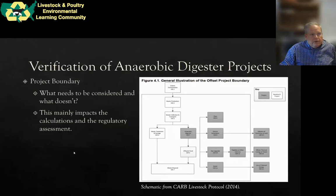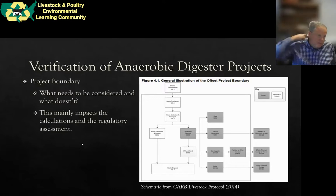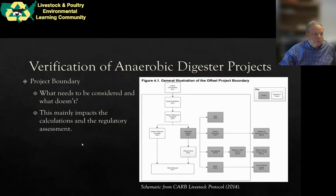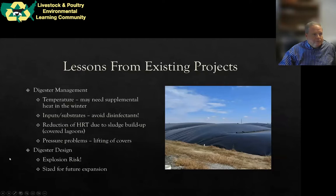Each protocol has an evaluation of what the project boundary looks like. This schematic is from the livestock protocol for offset projects. You can see the outer boundary line — the entire fermentation and cow burps is SSR one at the top, and it's outside the boundary so we're not considering those. But we are considering emissions from SSR four on the far left side of the schematic, which is waste treatment and storage — the emissions from your lagoon or storage pond. This mainly comes into play for calculations and regulatory assessment of whether the farm and project is in regulatory compliance.